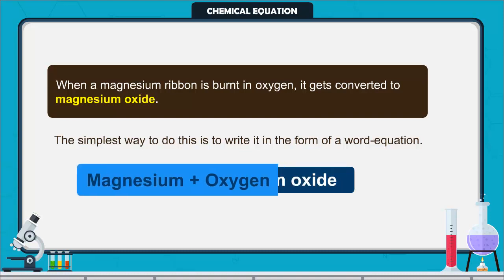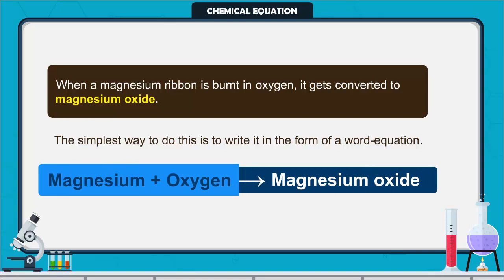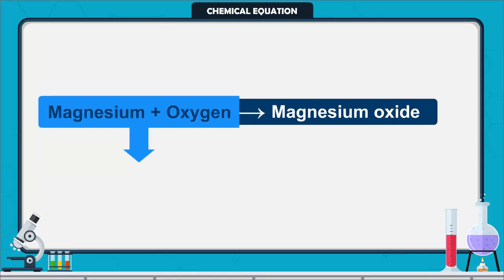Magnesium plus oxygen produce magnesium oxide. The left hand side of a chemical equation represents the reactants, and the right hand side represents the products.